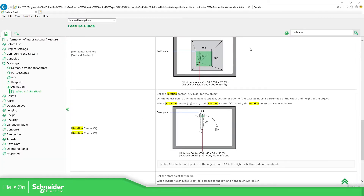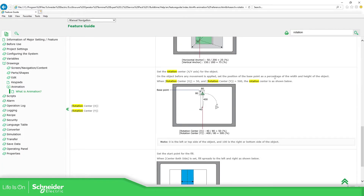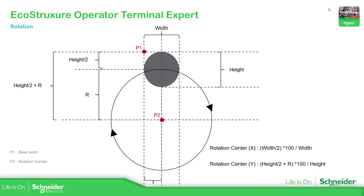If we go to the help of the EcoStruxure Operator Terminal Expert, you can see here this example of how to make the rotation based on the rotation center. So basically there are a few things that we need to check: the base point, the trajectory that we want, the rotation center, and then make the calculation.